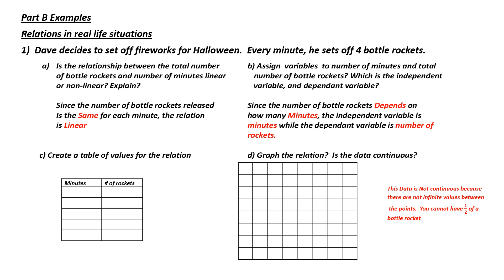Part B: Examples — Relations in real-life situations. Dave decides to set off fireworks for Halloween. Every minute, he sets off four bottle rockets. Part A: Is the relationship between the total number of bottle rockets and the number of minutes linear or nonlinear? Every minute, Dave is releasing the same amount, so there is a constant amount being released each minute. Therefore, we would call that linear.